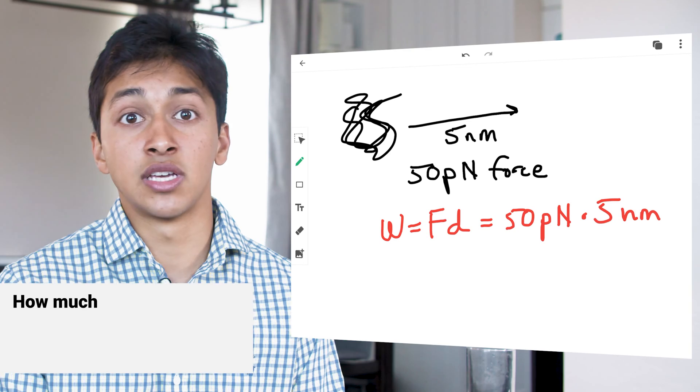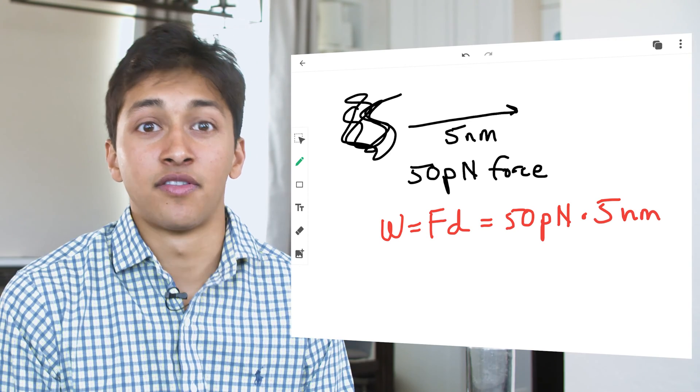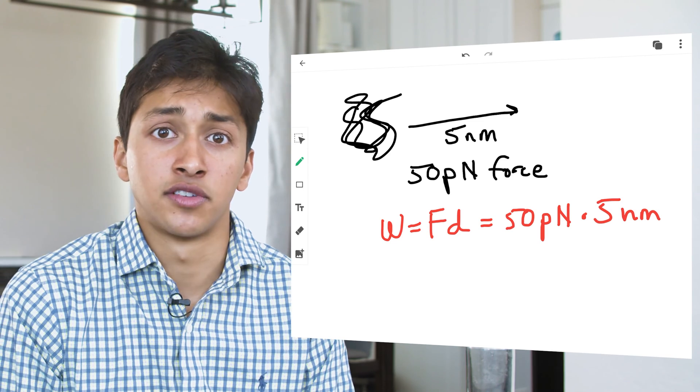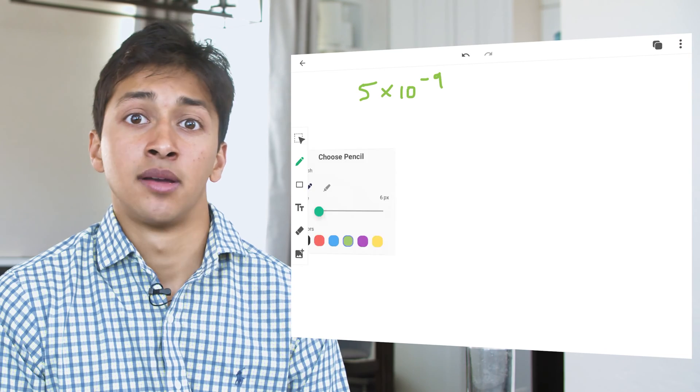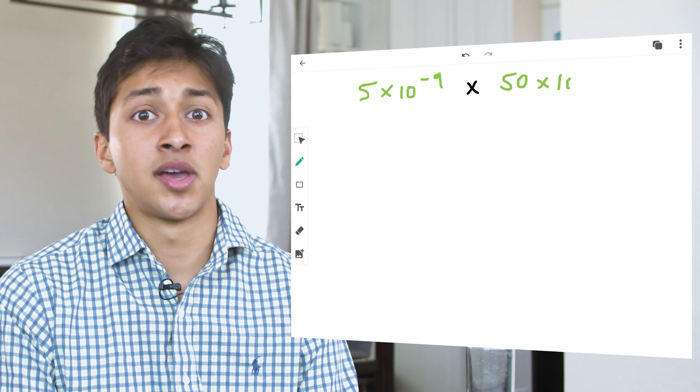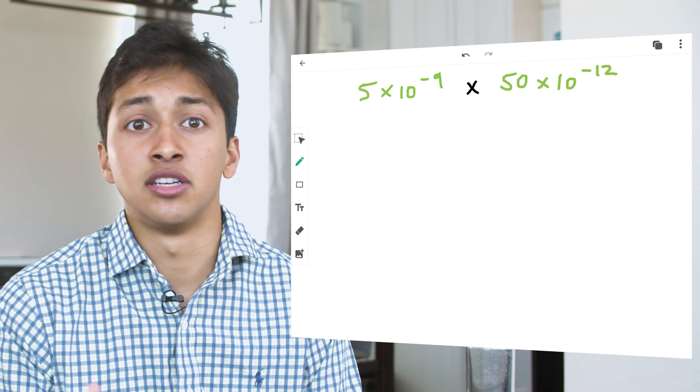Remember, the formulas you are using here are the exact same. The multiplication from our original problem, 5 nanometers by 50 piconewtons, brings us to another point that students often struggle with. How do we multiply 5 times 10 to the negative 9th by 50 times 10 to the negative 12th? MCAT math is tricky, but it's manageable. You are not allowed to use a calculator on the exam, and the AAMC knows this.